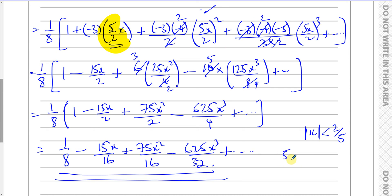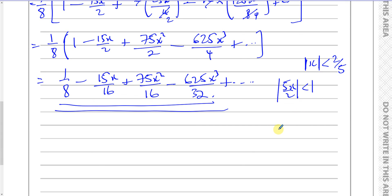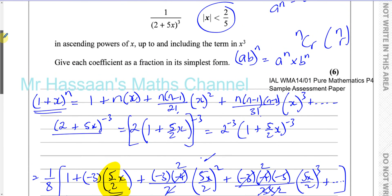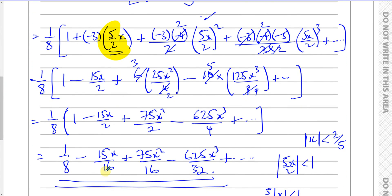So if the modulus of 5x/2 is less than 1, the expansion is valid. If they ask for which values of x the expansion is valid, you say: 5/2 times the modulus of x is less than 1, so the modulus of x is less than 2/5, meaning x is between −2/5 and +2/5. As mentioned, this was not actually part of the question, but it's useful to understand in case such a question does appear. That's the end of question one.